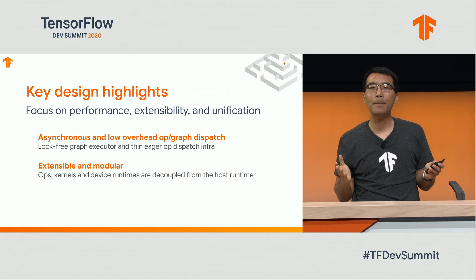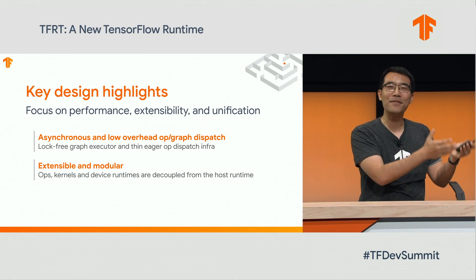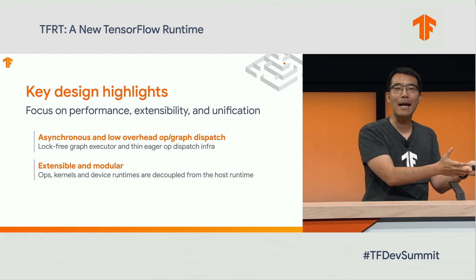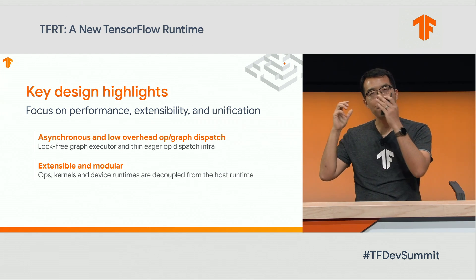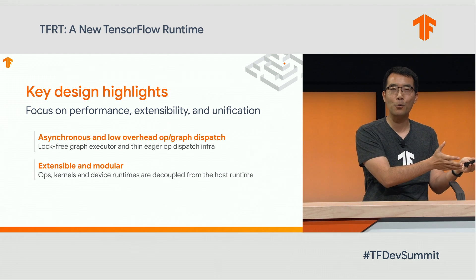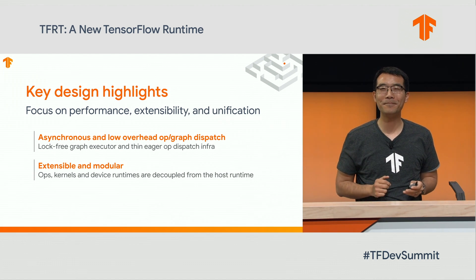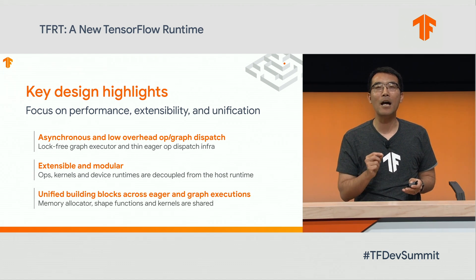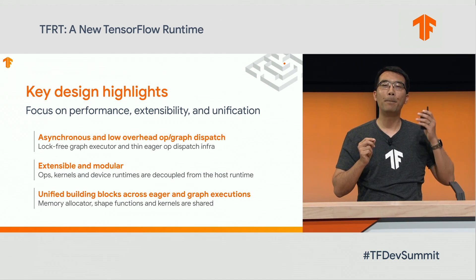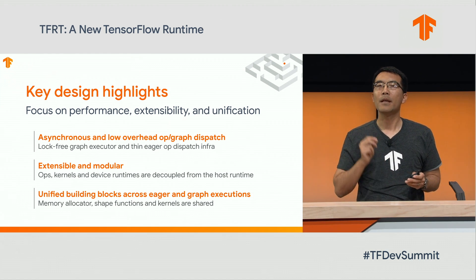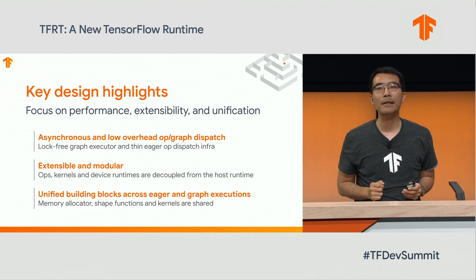Second, to talk about extensibility, let's first cover some background. Host runtime is the component that drives host CPU and I/O work, and it also drives locally attached devices through the device runtimes. TFRT keeps device runtimes separate from the host runtime, so that when you add new device runtimes, you don't have to extend the rest of the runtime. The TFRT design also focuses on building common abstractions, such as shape functions and kernels, to be used in both graph and eager execution. This way, we get consistent behavior between eager and graph, and also avoid duplicated engineering efforts.